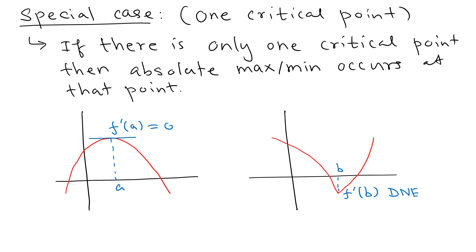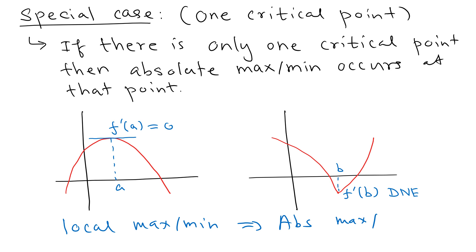This special case is really important. If there is only one critical point, the local or relative maximum or minimum simply becomes the absolute maximum or absolute minimum. That's the benefit of having only one critical point — the local maximum or minimum is also the absolute maximum or minimum, depending on the situation, and it happens at the critical point.